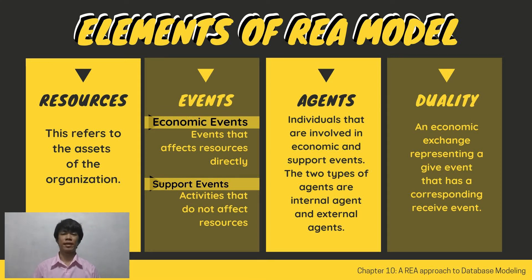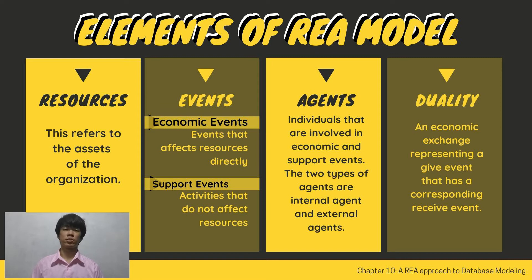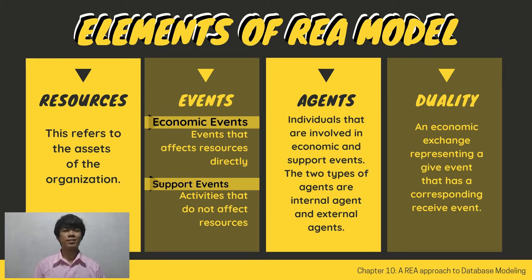Support Events can still affect resources. The next element is Agents — individuals involved in Economic and Support Events. There are two types: Internal Agents, who work inside the company, and External Agents, who work outside the company. The last element is Duality, which is an economic exchange representing a Give Event that has a corresponding Receive Event.